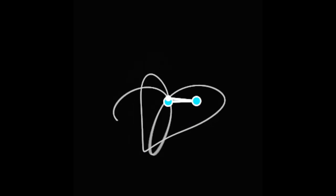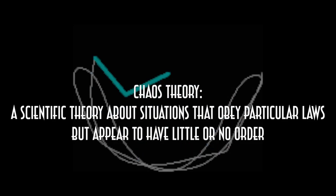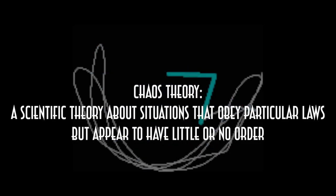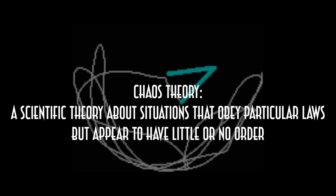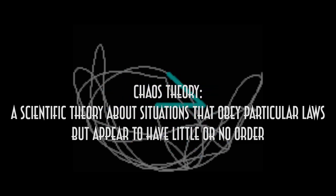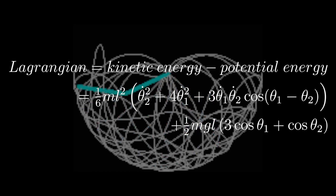The scientific studies behind these types of systems are usually categorized as chaos theory. Let's look at the definition. A scientific theory about situations that obey particular laws but appear to have little or no order. This definition acknowledges the fact that systems that appear to be chaotic still act according to certain laws. The double pendulum appears to act chaotic, but it doesn't. It acts according to the laws of physics.